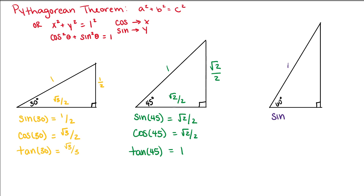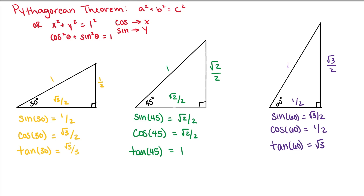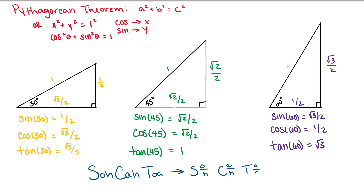Similarly, with our 60 degree triangle, our sine is √3/2, so the opposite side is √3/2. Our cosine is 1/2, so the adjacent side is 1/2. And our tangent is √3, which is (√3/2) over (1/2). So whenever we're given a triangle, we can use the word SOHCAHTOA to remember how to find our values for sine, cosine, and tangent. For sine, we have opposite over hypotenuse (O/H). For cosine, we have adjacent over hypotenuse (A/H). And for tangent, we have opposite over adjacent (O/A).